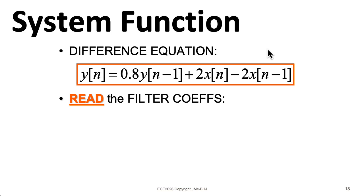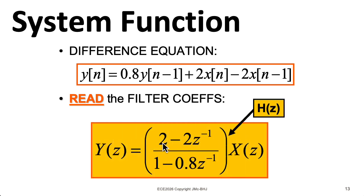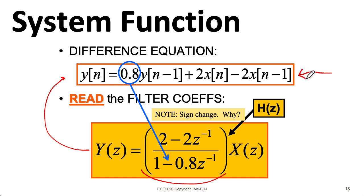So to get the system function for this equation, in the numerator we just read off two and minus two, and in the denominator we read off one and minus zero point eight. Notice that there is this sign flip on all of the coefficients for the y's on the right hand side that comes from when you implicitly move them over to the left hand side. And you want to be able to go the other direction. So we might give you the system function on a quiz, ask you to write the difference equation, in which case you should write this.